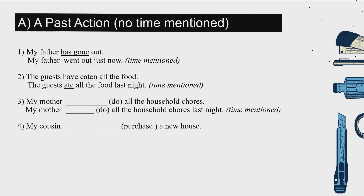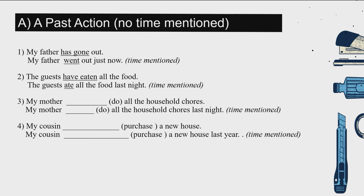Number four: talk about my cousin — 表哥/表弟. Purchase a new house — 买. 我的表哥已经买了一间新房子. Use 'has' with the past participle — for 'purchase' the past participle is 'purchased' with ED. If the sentence is given with a time, like 'My cousin purchased a new house last year', you use past tense only, because 'last year' is mentioned.